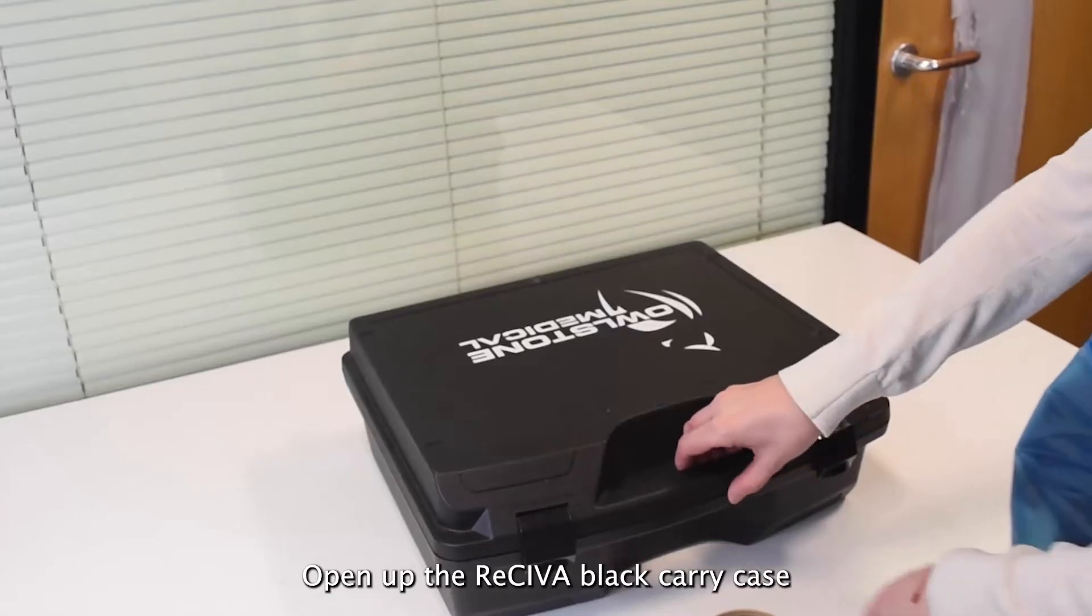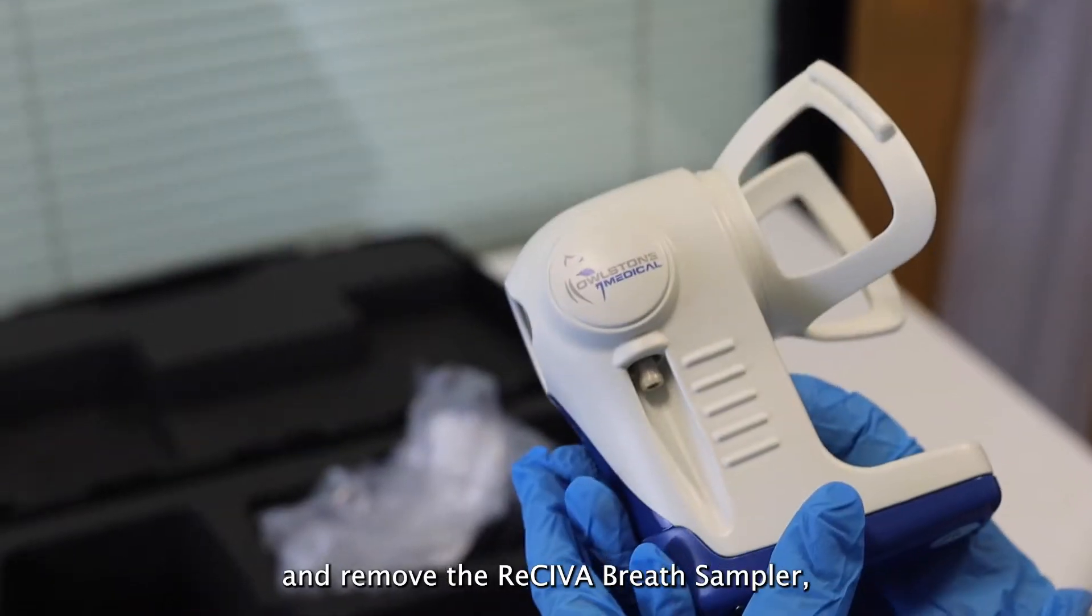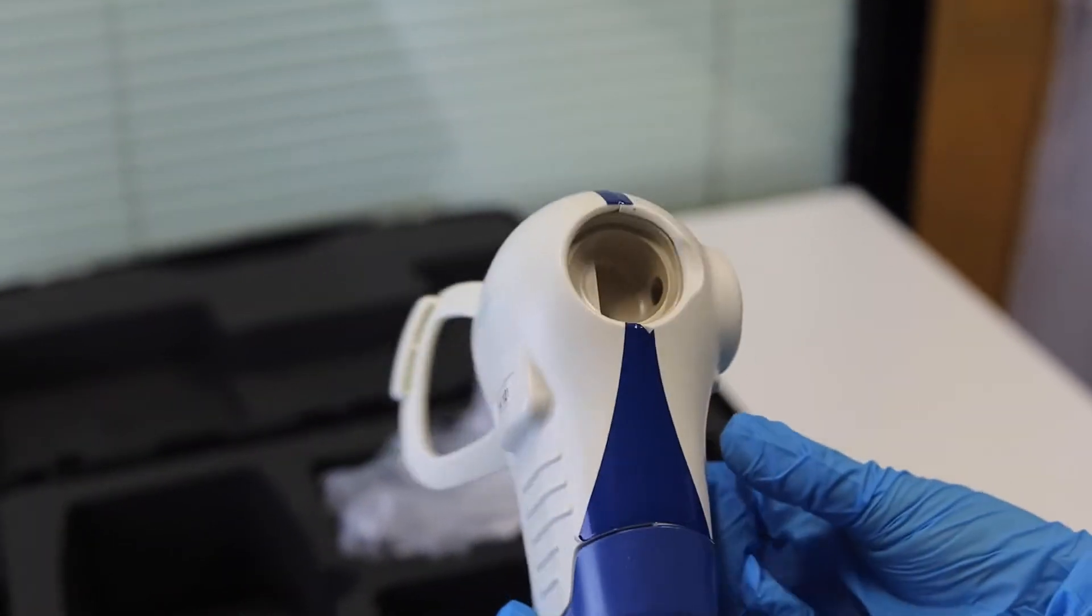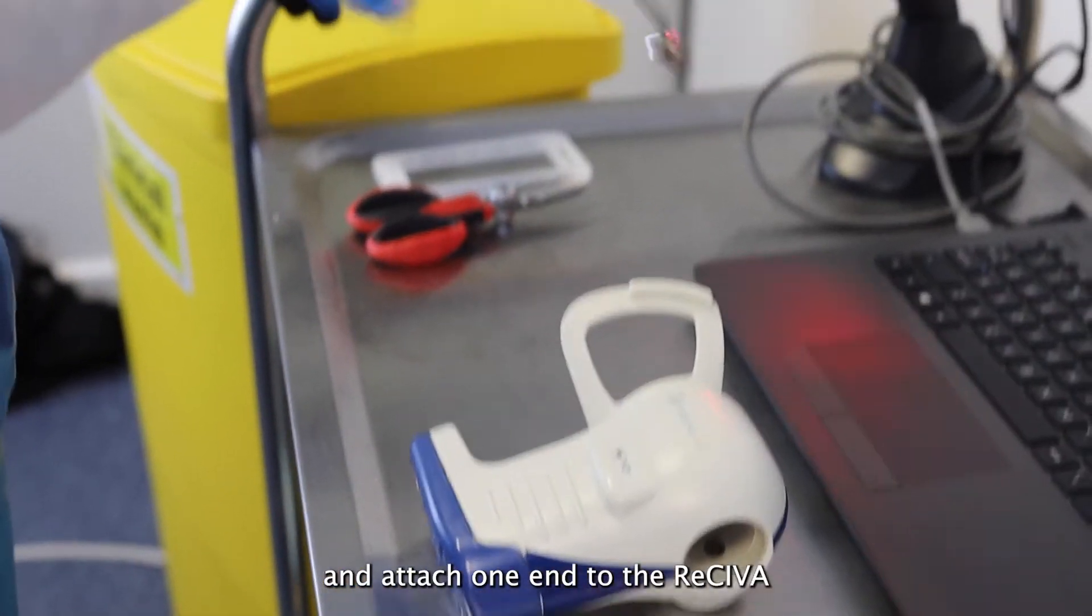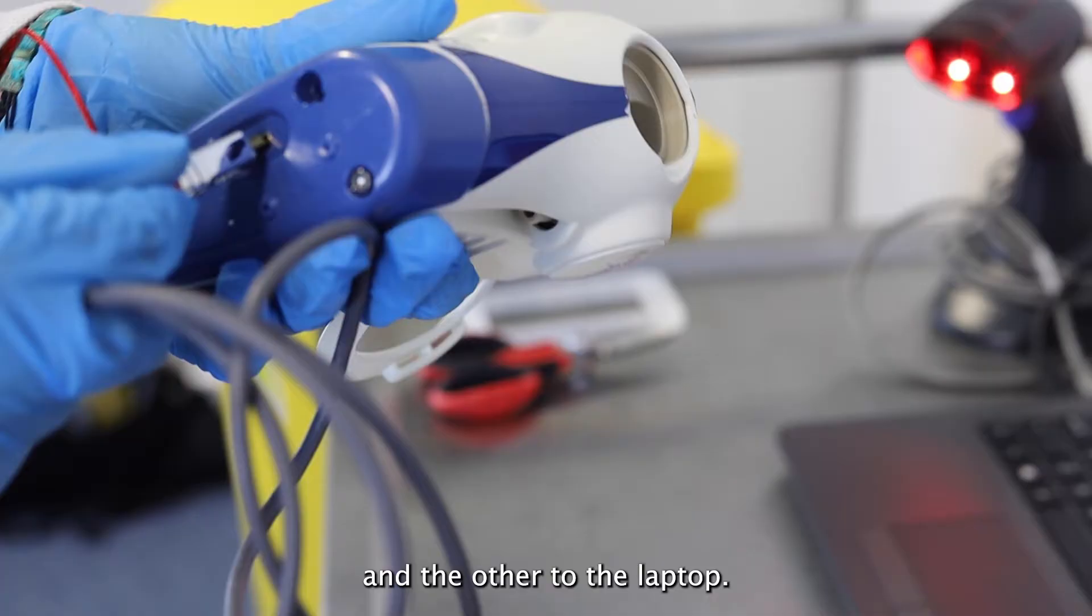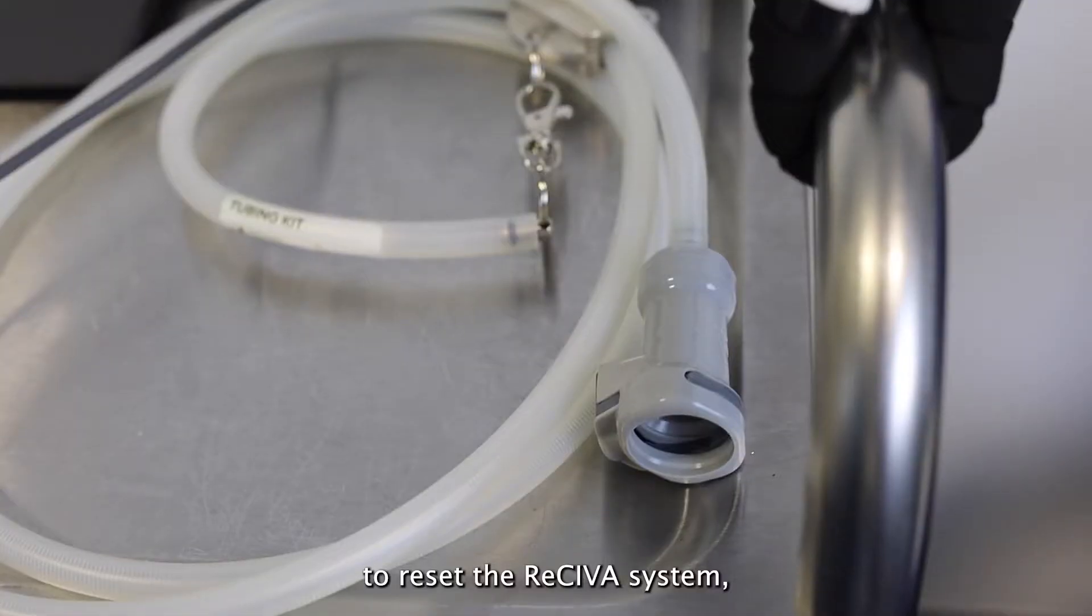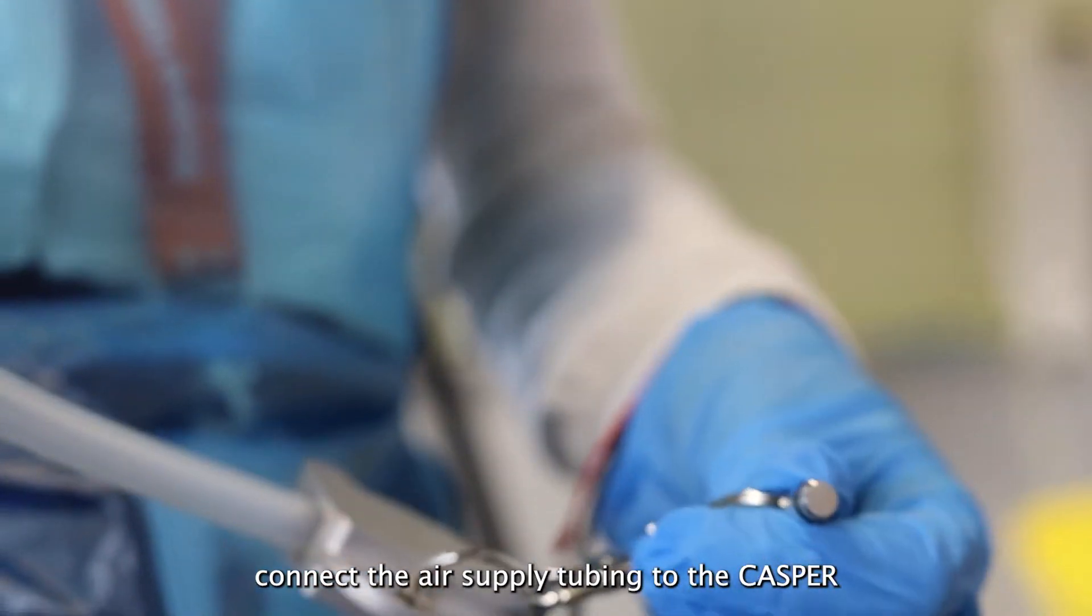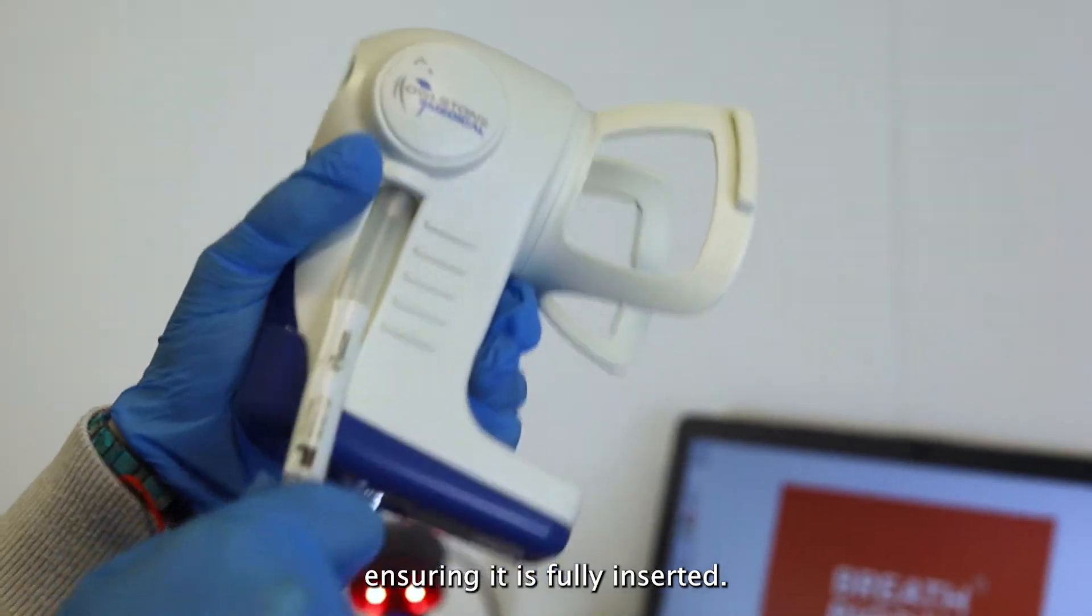Open up the receiver black carry case and remove the receiver breath sampler. Unwind one of the receiver USB cables and attach one end to the receiver and the other to the laptop. This powers the receiver and should be disconnected at the end of every use to reset the receiver system. Connect the air supply tubing to the Casper and remove the bung, then connect the tubing to the receiver ensuring it is fully inserted.